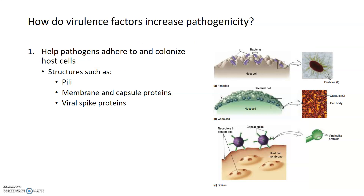Virulence factors can act in a couple of different ways. First, in order to cause an infection and disease, a pathogen has to be able to survive and colonize host cells. Virulence factors can help pathogens adhere to host cells and multiply from the very beginning to cause an infection. Some virulence factors encode structures such as pili or fimbria, which are used for attachment to surfaces — cell membranes count as surfaces — so some pathogens use their pili to adhere to host cells and colonize particular tissues.